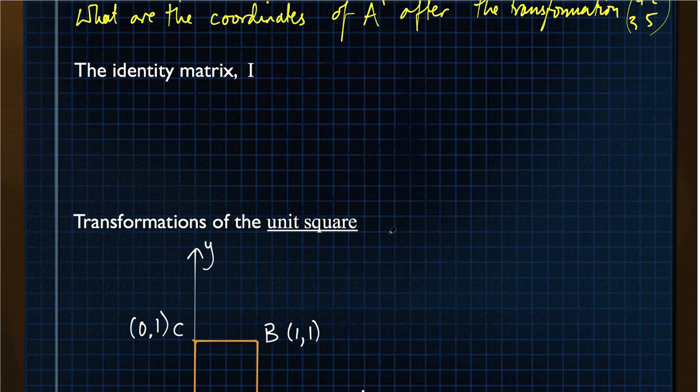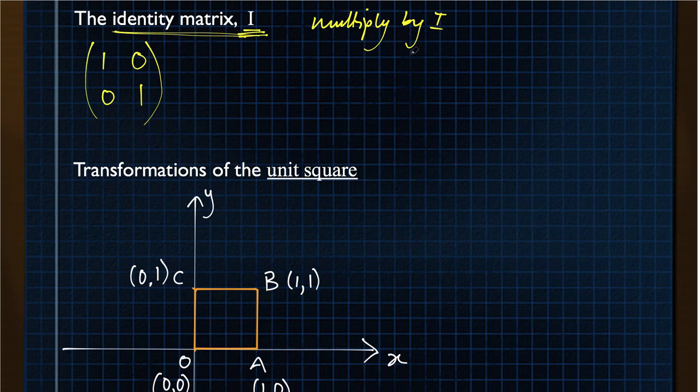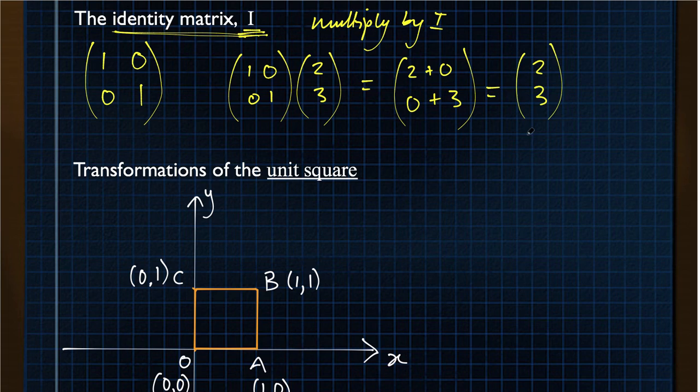The identity matrix is a special transformation matrix because it has absolutely no effect. In fact, it doesn't transform the shape at all. This is one you need to know, the identity matrix, represented by I. Sometimes a question might just refer to I, say multiply by I, or prove that this is I. So multiply by I, it has absolutely no effect. If we multiply this on the matrix 2, 3, for example, we get 1 times 2 is 2, 0 times 3 is 0, 0 times 2 is 0, 1 times 3 is 3, and the result is 2, 3. So nothing has changed at all.